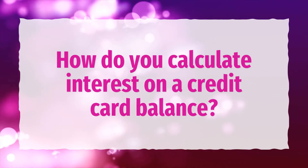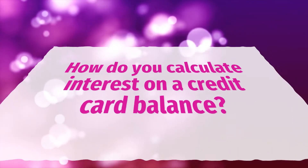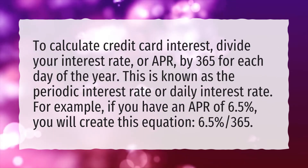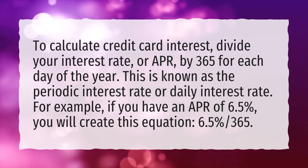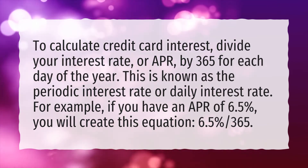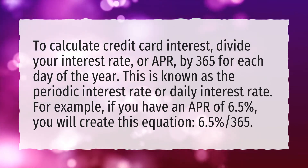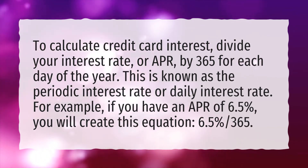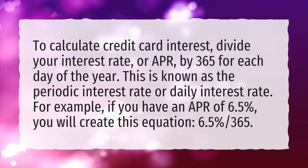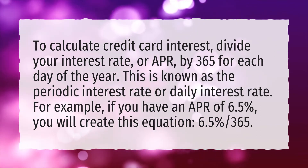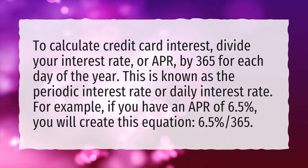How do you calculate interest on a credit card balance? To calculate credit card interest, divide your interest rate, or APR, by 365 for each day of the year. This is known as the periodic interest rate or daily interest rate. For example, if you have an APR of 6.5%, you will create this equation: 6.5% ÷ 365.